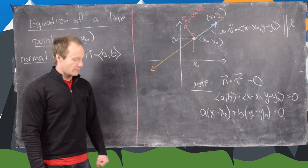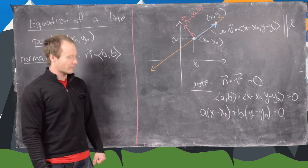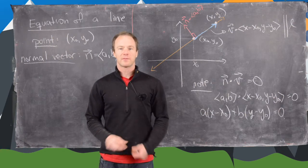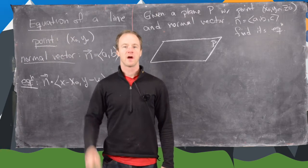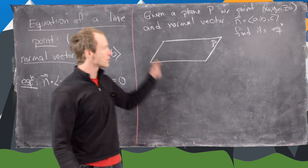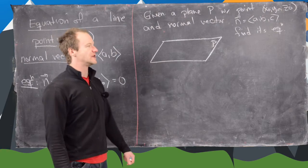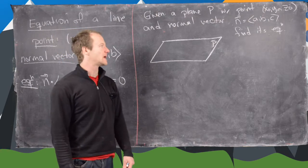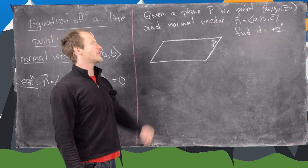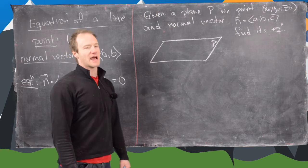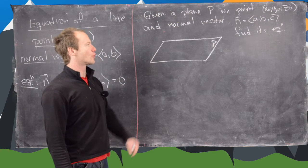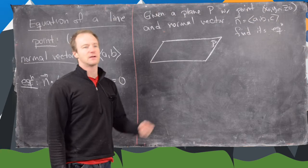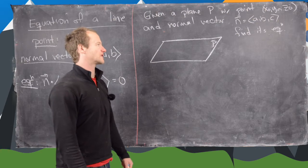So now what we want to do is scale this up to three dimensions. We're moving to the equation of a plane. Let's say we have a plane P with a point x-naught, y-naught, z-naught and a normal vector a, b, c — we'll call that normal vector n. Our goal is to find the equation of this plane.